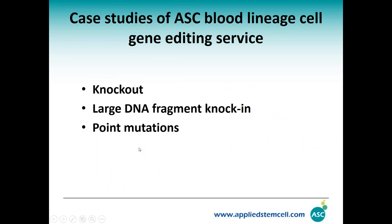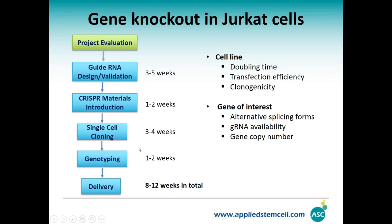Now we will give you some case studies of our blood cell genetic editing services: knockouts, large DNA piece knock-ins, and point mutations. First, knockouts. Before a project comes in, we have a project evaluation. We need to make sure the cell line has the correct doubling time, transfection efficiency, and clonogenicity. The doubling time will significantly affect the single cell colony process if you want a pure clone. If you have low transfection efficiency you will not be able to get good editing efficiency. You also have to make sure your cells can grow from single cells to get a pure clone.